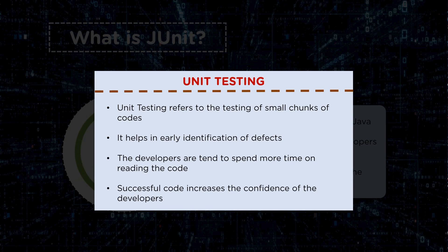Unit testing refers to the testing of small modules or small pieces of code. It's used for early identification of defects and bugs, because you cannot simply rely on the QA team to perform testing and then provide feedback. With this unit testing framework, you can immediately get feedback once you run the test cases, allowing developers to know which tests pass or fail without spending extra time fixing bugs.